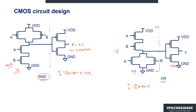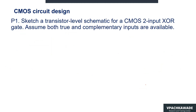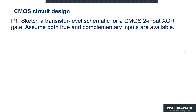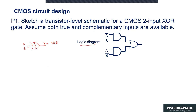This is how we create circuit diagrams for non-inverting functions. The first exercise asks us to sketch a transistor-level schematic for CMOS two-input XOR logic. It is assumed that both true and complementary inputs are available. The exclusive OR output Y can be written as A XOR B, which expands to A-bar·B + A·B-bar. This is the logic equation for XOR.